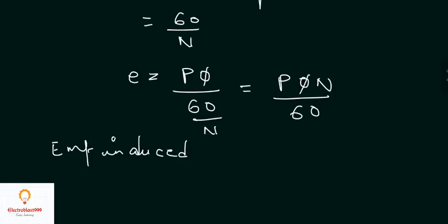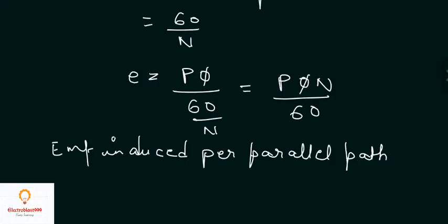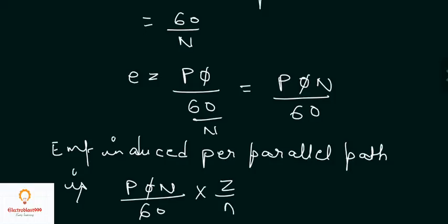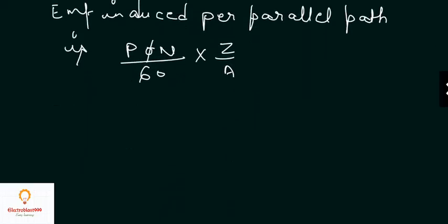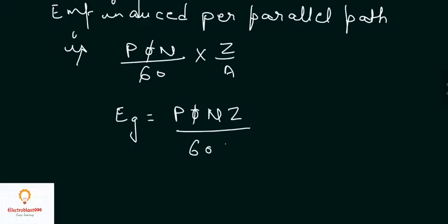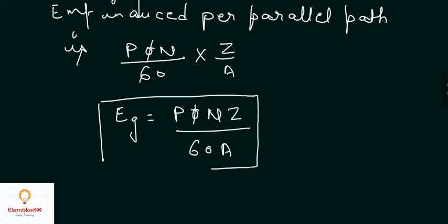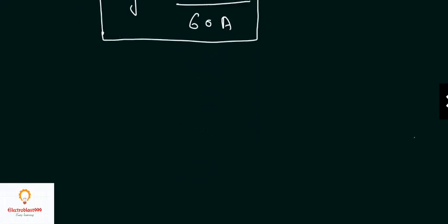The EMF induced per parallel path is then P-phi-N over 60, multiplied by Z over A. So the generated EMF equation becomes E = P-phi-N-Z divided by 60A. This is the EMF equation of a generator.